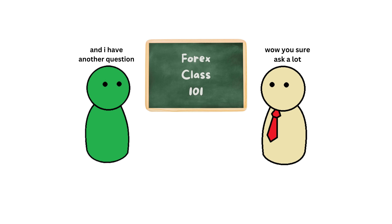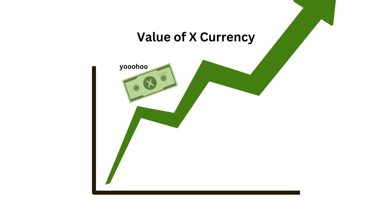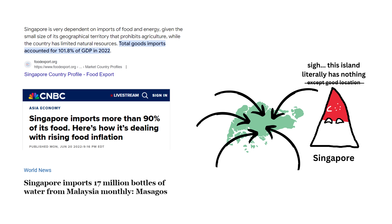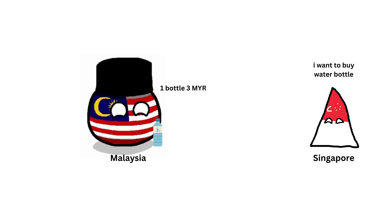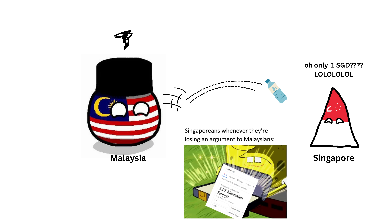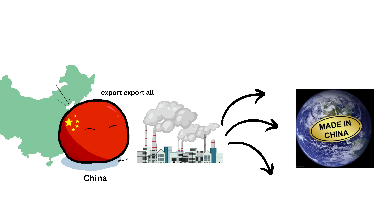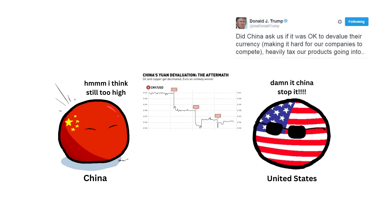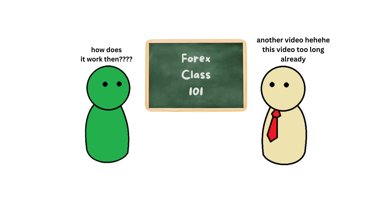And maybe your next question is, should we make our currency as strong as possible? The answer is, not really. Different countries have different needs. For example, a country that imports a lot, like Singapore, may want a strong currency to make imports cheaper. While a country that exports a lot, like China, may want a weaker currency to make its products cheaper for other countries. That's why China has been accused of purposely lowering its currency's value, called currency devaluation. How does this work? I'll explain it in another video.